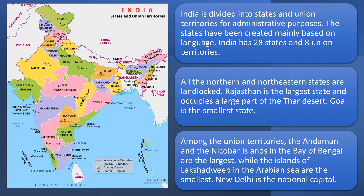All the northern and northeastern states are landlocked, that is, they do not have access to the sea. Rajasthan is the largest state, which occupies a major part of the Thar Desert. Goa is the smallest state. Among the union territories, the Andaman and Nicobar Islands are in the Bay of Bengal and are the largest, while the islands of Lakshadweep are in the Arabian Sea and are the smallest. New Delhi is the national capital.